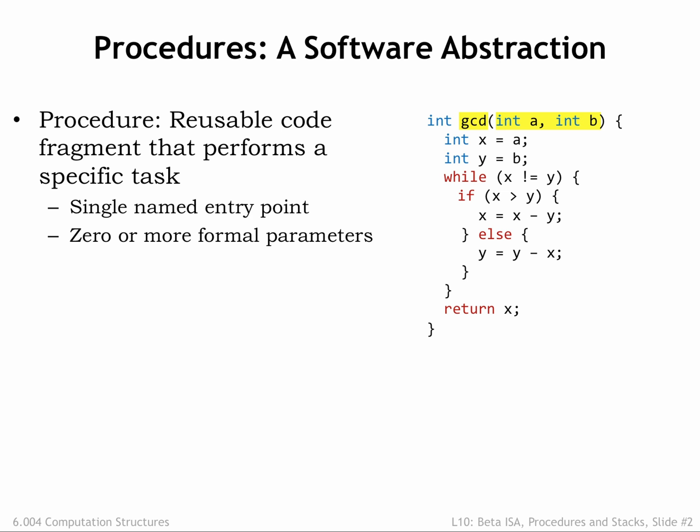Procedures have zero or more formal parameters, which are the names the code inside the procedure will use to refer to the value supplied when the procedure was invoked by a procedure call. A procedure call is an expression that has the name of the procedure followed by a parenthesized list of values, called arguments, that will be matched up with the formal parameters. The value of the first argument will become the value of the first formal parameter while the procedure is executing. The body of the procedure may define additional variables, called local variables, since they can only be accessed by statements in the procedure body.